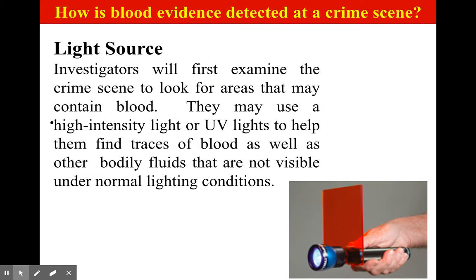So how is blood evidence detected at a crime scene? One thing they can do is use a light source, which is a great way because it doesn't mess up your crime scene. Investigators will first examine the crime scene to look for areas that may contain blood. They can use a high-intensity light or ultraviolet UV light to help them find traces of blood, as well as other bodily fluids that are not visible under normal lighting conditions.